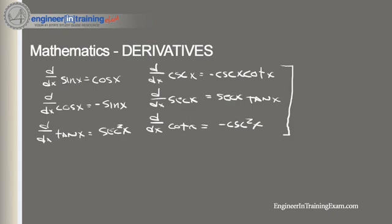If the derivative of f is itself differentiable, we can take the derivative of it as well. This new function f double prime is called the second derivative of f. If we continue to take the derivative of a function, we can find several higher-order derivatives. These higher-order derivatives are seen often when working with motion application problems. The velocity of a particle is the first derivative of the displacement function. The acceleration of a particle is the derivative of the velocity function, or equivalently the second derivative of the displacement function.